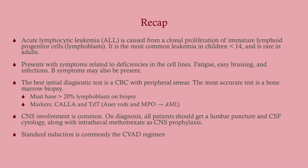In recap: ALL presents with deficiencies in the cell lines - fatigue, easy bruising, and infections - plus B symptoms like night sweats and weight loss. Best initial test is a peripheral smear; most accurate test is a bone marrow biopsy - you need more than 20% blasts. The markers are CALLA and TdT; if you have Auer rods, that's AML. CNS involvement is common, so get a lumbar puncture with CSF cytology and administer intrathecal methotrexate as CNS prophylaxis. Induction is CVAD.